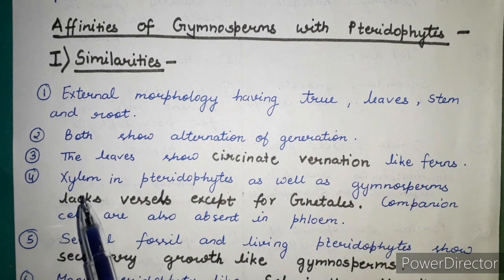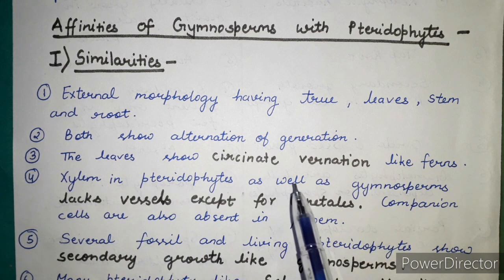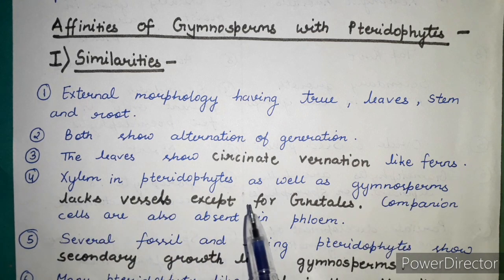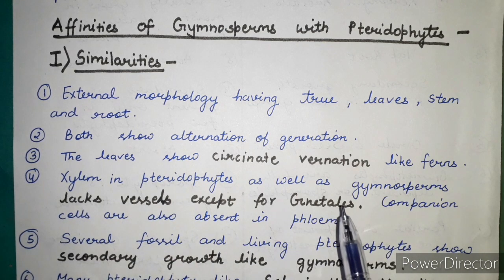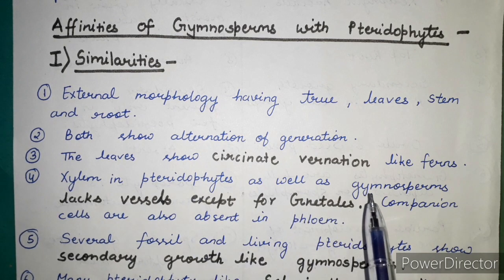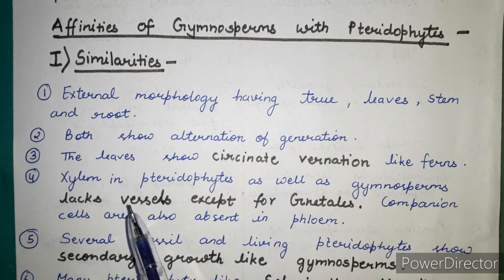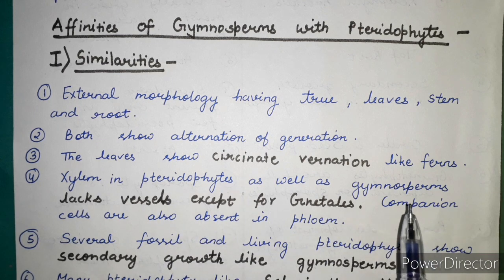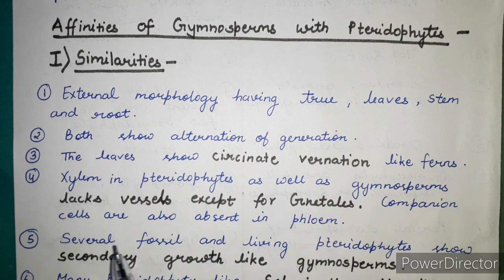Leaves in both groups show circinate vernation, as seen in ferns. Xylem in pteridophytes as well as in gymnosperms lacks vessels, except in Equisetales (knee tails). Companion cells are also absent in the phloem in both cases.